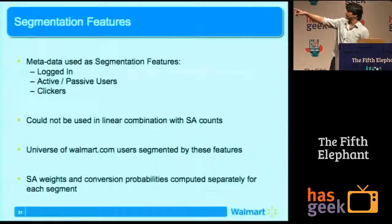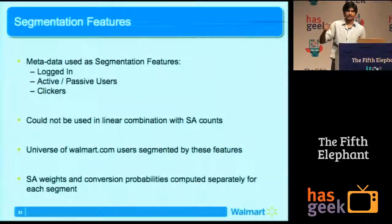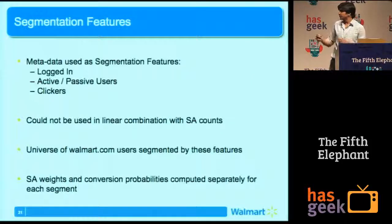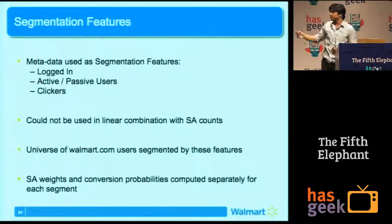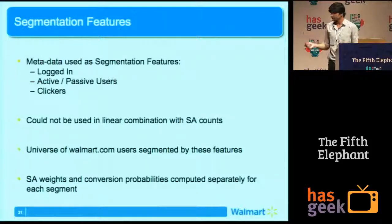We also use the metadata mentioned — like whether it's a logged-in user, an active user, or a clicker. We couldn't combine them directly with site activity because site activity is linear counts (10, 20, 30 item views), while these are Boolean values: is he a clicker or not? So we took the entire space of Walmart.com users and divided them into eight groups. One group would be all users who log in, are active, and click on ads. We computed weights and conversion probabilities independently for each group — all done mutually exclusively.